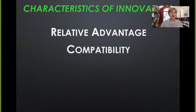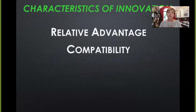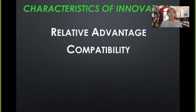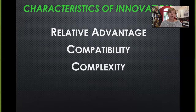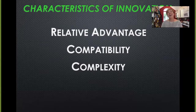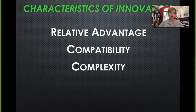The second characteristic is compatibility — the degree to which potential consumers feel that a new innovation is consistent with their present needs, values, or practices. Is it compatible with what they know? The third is complexity — the degree to which a new product is difficult to understand or use. The harder it is to understand, the more difficult it will be for that technology to diffuse. So the complexity level needs to be low.